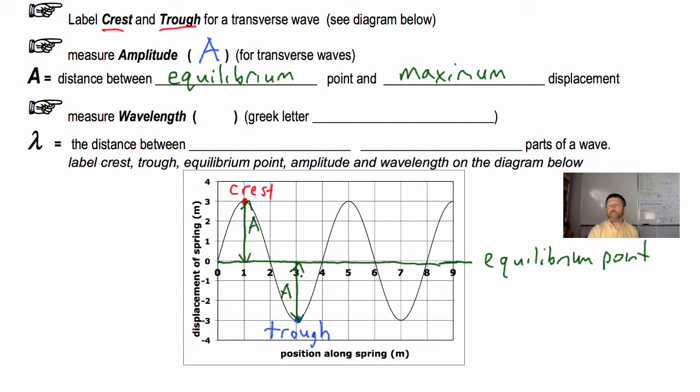Next up is wavelength. Now for wavelength, we use the letter, the Greek letter, lambda. That's spelled L-A-M-B-D-A. Lambda is the symbol we use for wavelength. And the wavelength is simply the distance between successive identical parts of the wave.